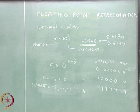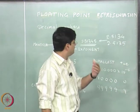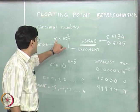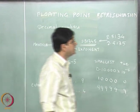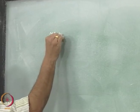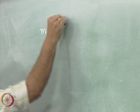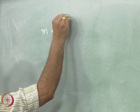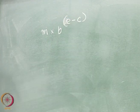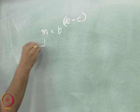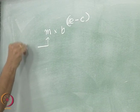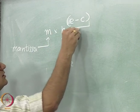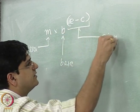We talked about the floating point representation. Now we will talk about the floating point representation in binary base, or any base for that matter. Rather than writing the point representation in binary base, we will write it as m times b to the power E, where E stands for the exponent. We will write the exponent as e minus c. Here, m is the mantissa, b is the base, and e minus c becomes our signed exponent.